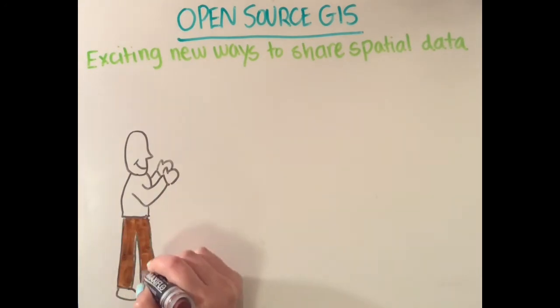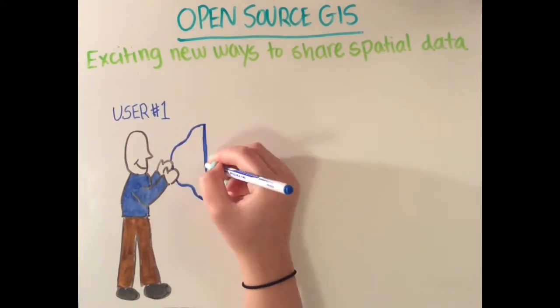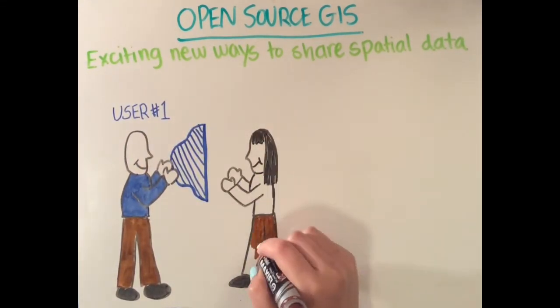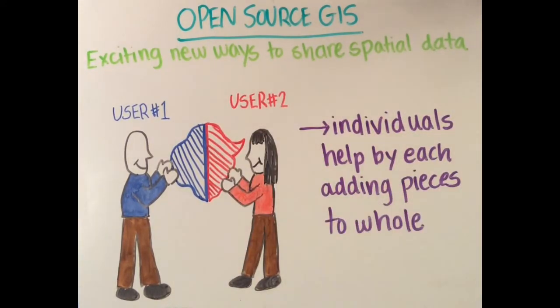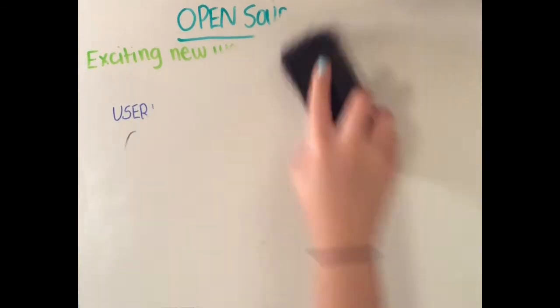The creation of open source mapping softwares has allowed for users from around the world to contribute what they know about their neighborhoods and local environments to help create a better understanding of the whole world.